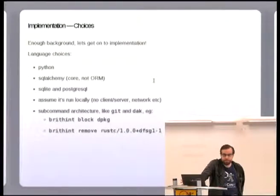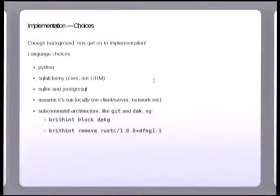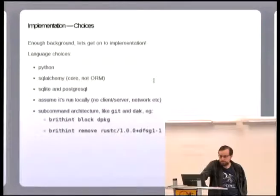Okay, so Britint. I chose to do it in Python because everything's in Python except if it's not in Haskell. SQLAlchemy is awesome because it lets you do database agnostic SQL. You kind of construct it as code and it'll do the dialect stuff for you. I haven't been able to find anything in any other languages that really do that. And I'm assuming it's run locally so I'm not doing client-server stuff, and I'm doing it as subcommands because subcommands are cool.